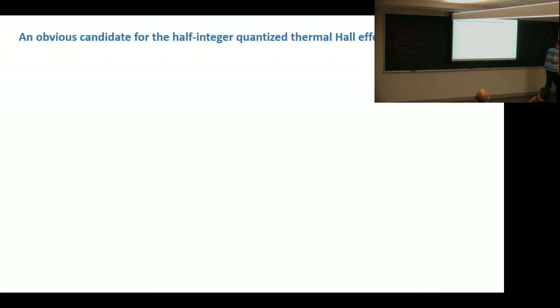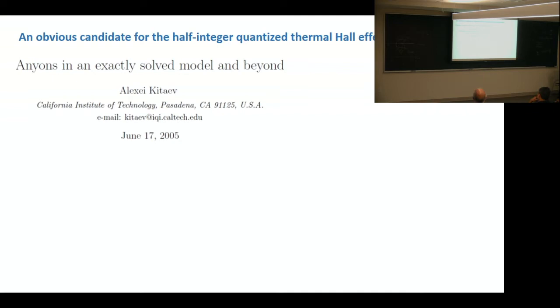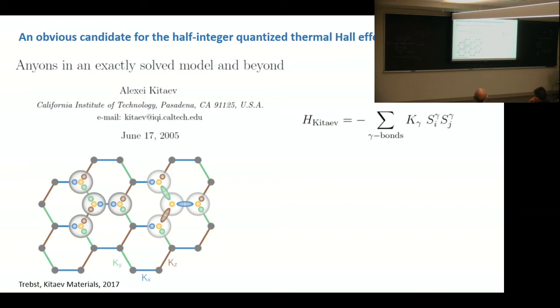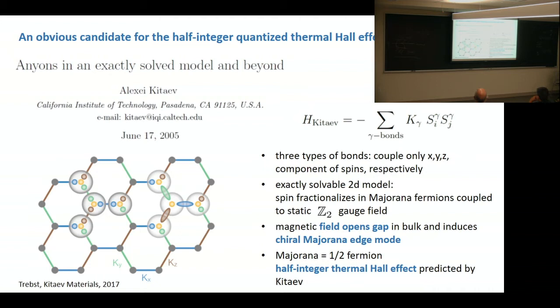So we have an obvious candidate for what we are seeing here. And this obvious candidate is what has been written in this paper by Kitaev in 2006. Namely, he looked at the Kitaev-Heisenberg model, and I think everybody in the audience has seen that, so I'll just skip more explanation here. So as you know, this model can be exactly solved in two dimensions, and it predicts that the spin is fractionalized into Majorana fermions and a Z2 gauge field. When you apply magnetic field, you can open a gap in these Majorana modes, and you get just chiral Majorana edge modes. And now as Majorana is half a fermion, this predicts automatically a half-integer quantum Hall effect.